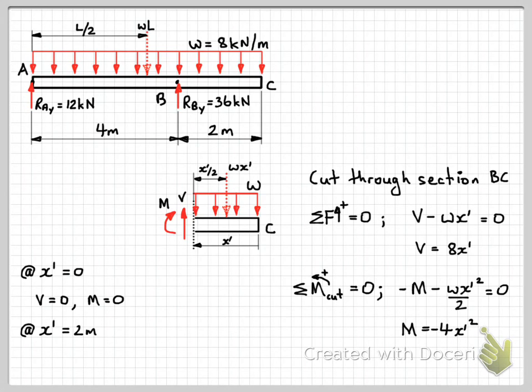And then for x dash equals 2 meters, substitute that into here, and we'll get V equals 16 kilonewtons.